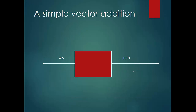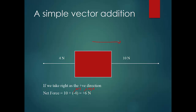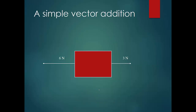If we take right as positive, a force of negative 4 Newton indicates leftward direction. Adding 10 Newton and negative 4 Newton gives positive 6 Newton, meaning the resultant force is 6 Newton towards the right. If you have 6 Newton pulling left and 3 Newton pulling right, you just add them using sign convention.